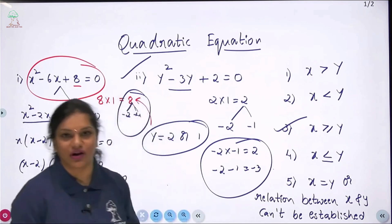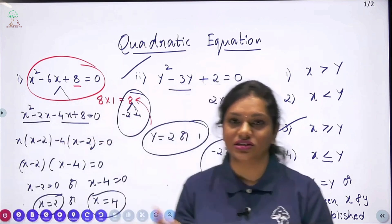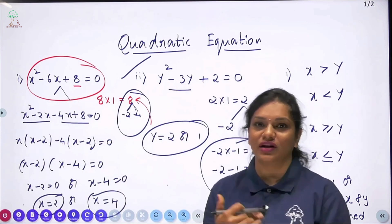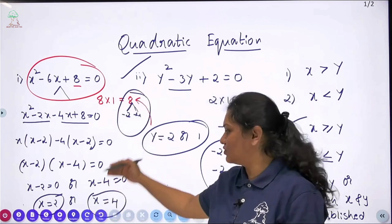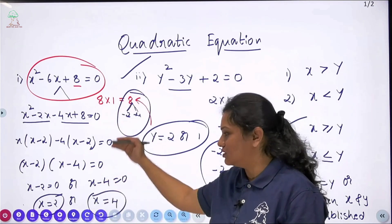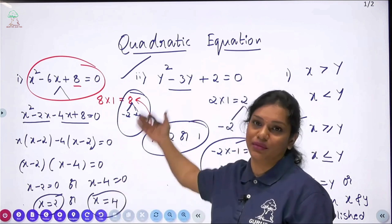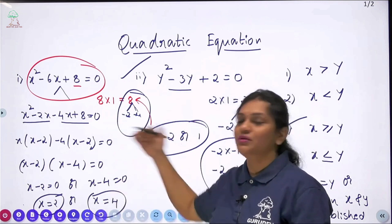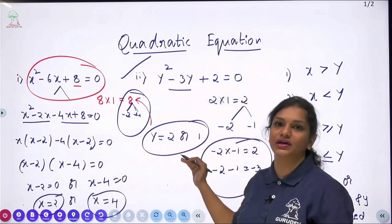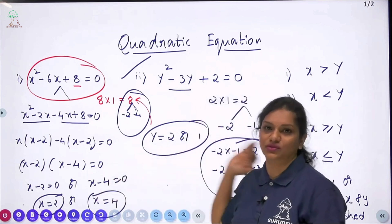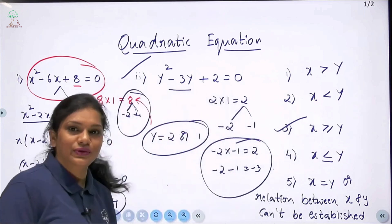For this equation, the answer is option 3: x ≥ y. If you follow the traditional method it is very lengthy — many steps just to find roots and compare. In the exam, avoid the traditional method; use the direct concept to get roots and compare quickly. I hope it is clear for everyone. Thank you.